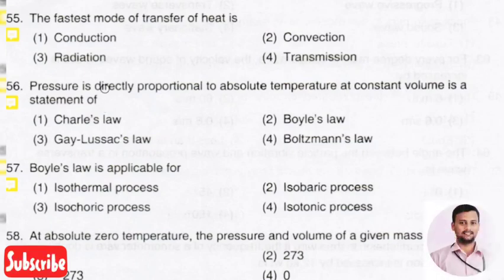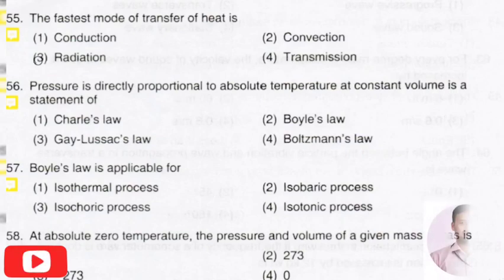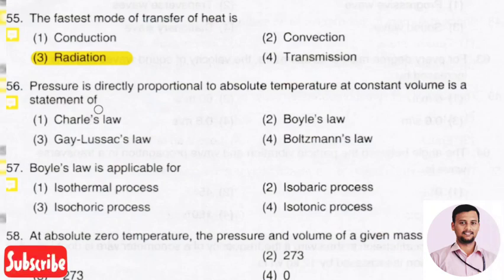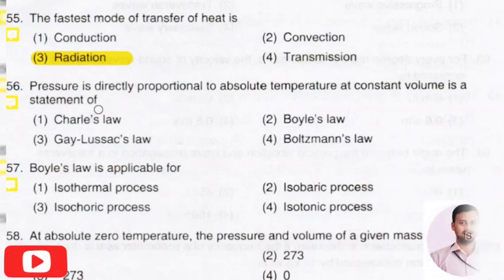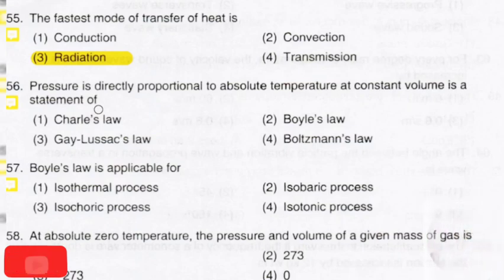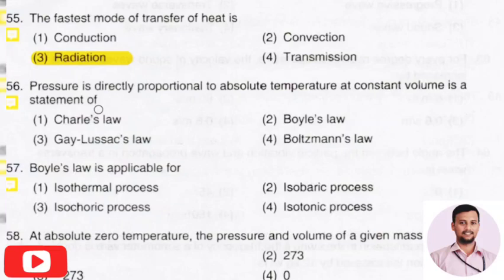The next question: the fastest mode of heat transfer is? The right answer is option 3, that is radiation. Radiation is a mode of heat transfer that requires no medium, unlike conduction and convection. So heat transfer by radiation takes place much faster compared to conduction and convection.